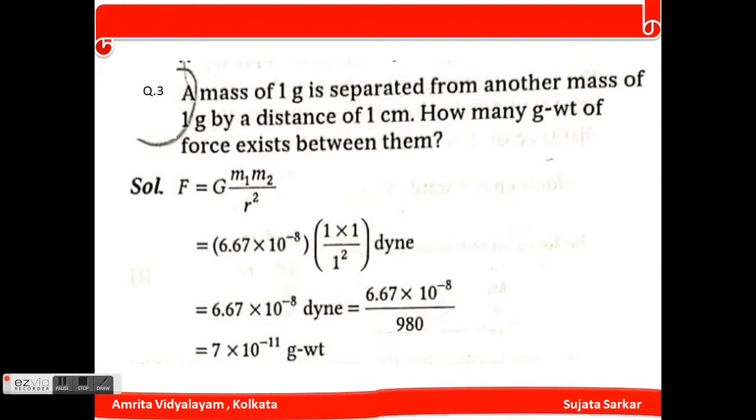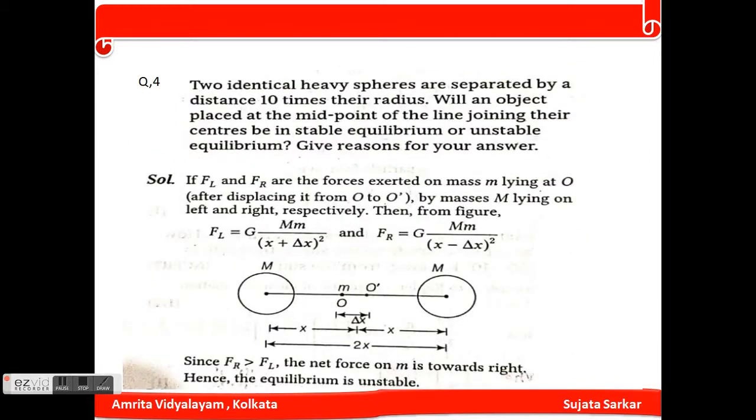A mass of one gram is separated from another mass of one gram by a distance of one centimeter. How many gram weights of force exists between them? F equals GMm/R². We can put the values: 6.67 × 10⁻⁸ times 1 times 1 divided by 1 squared, which is equivalent to 7 × 10⁻¹¹ gram weight.